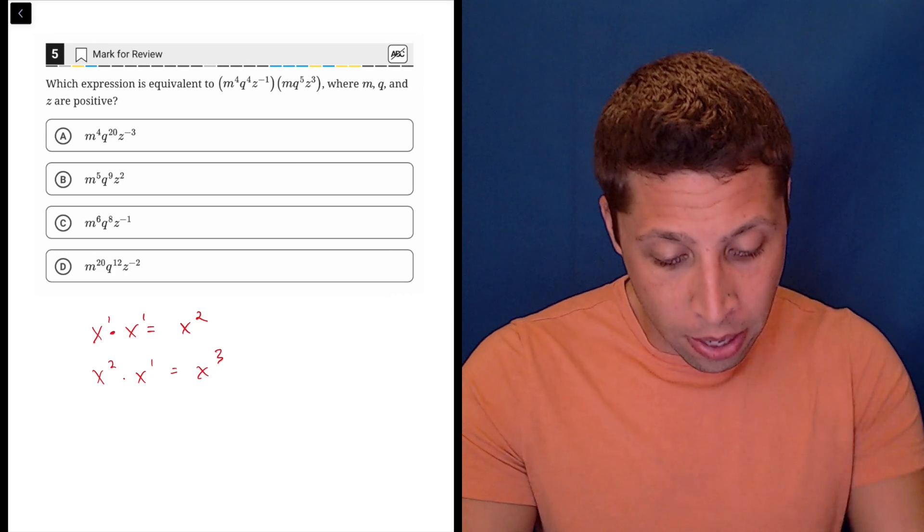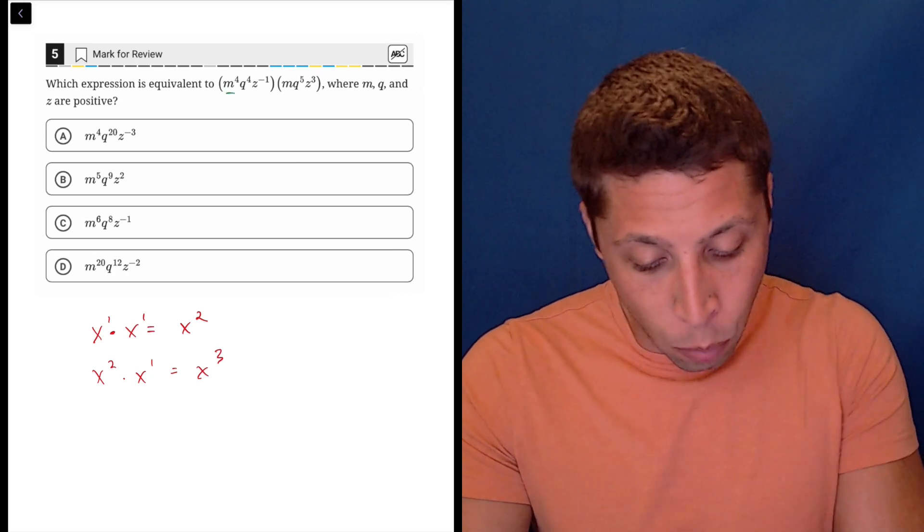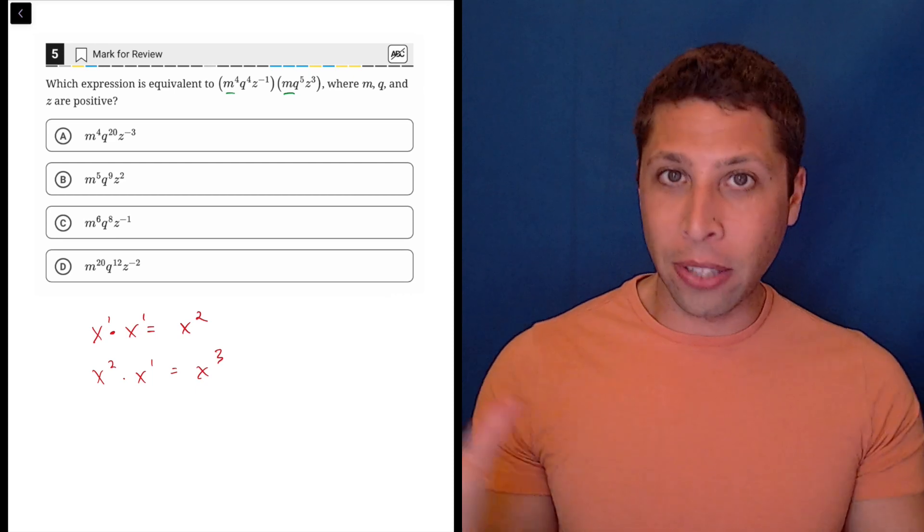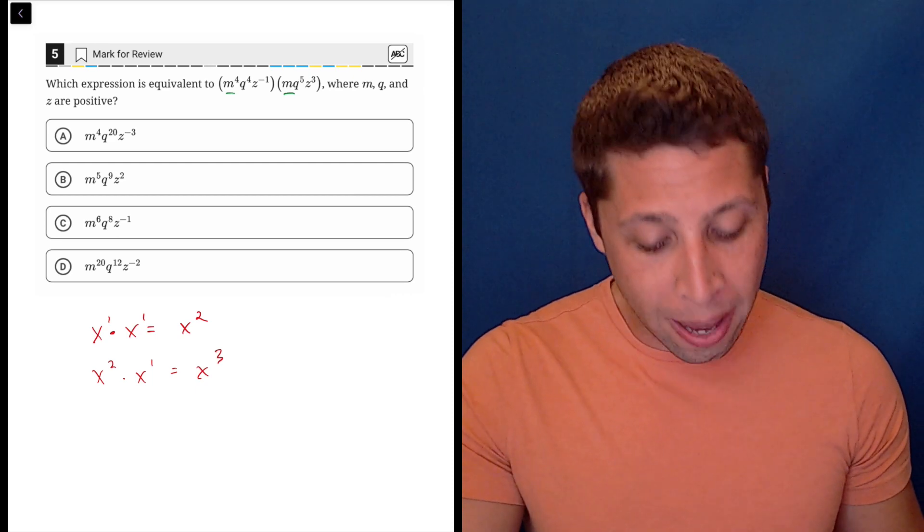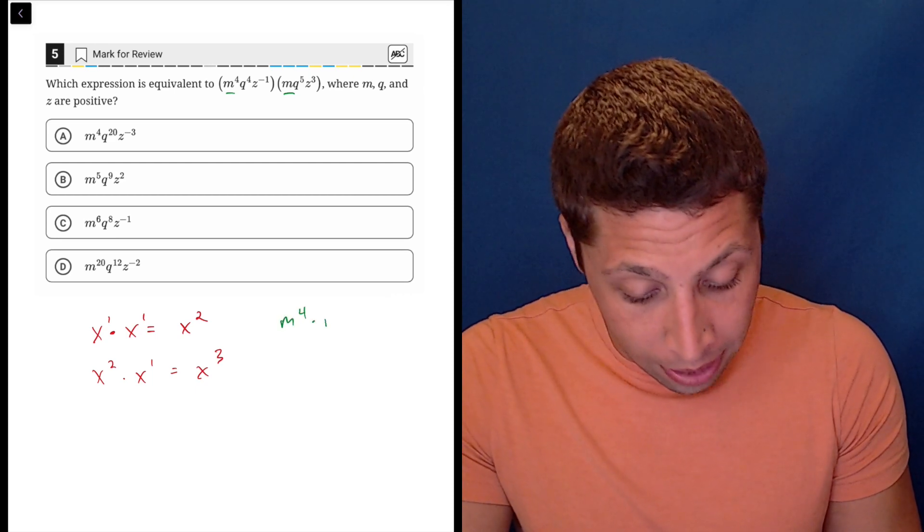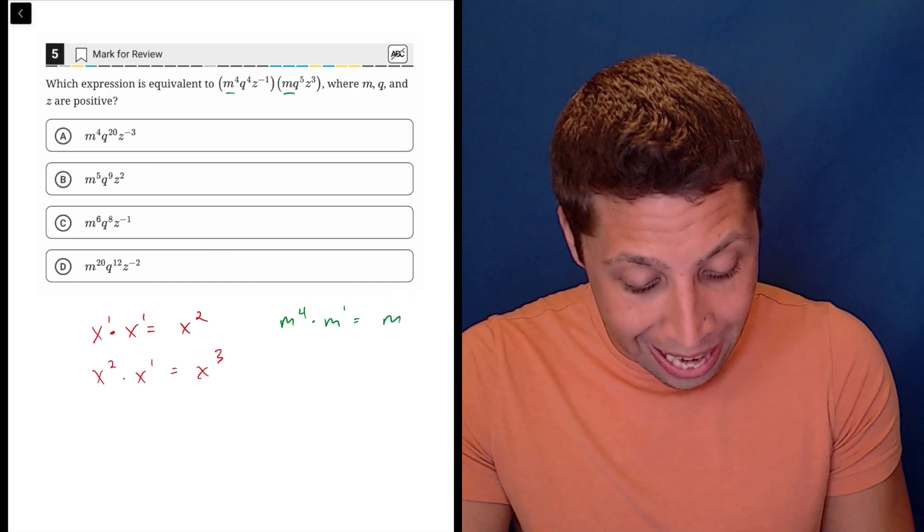So let's see here. We just have three components. We have the two m's. Even though they're in parentheses, everything's just being multiplied here. So we have m to the fourth times m to the first, so that's m to the fifth.